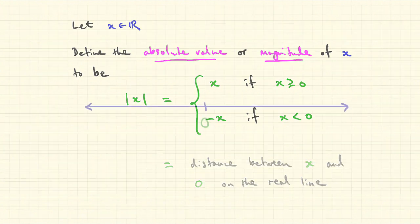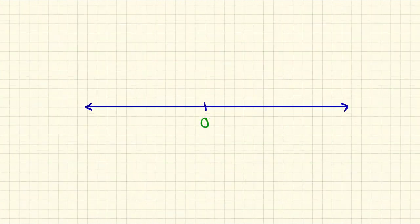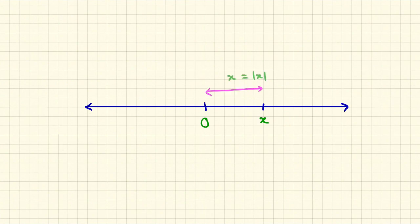Well, how could that be? Here's the real line with zero in the middle. If x is greater than zero, then the distance between x and zero is just x itself, which matches the formula for the absolute value of x. If x is less than zero, then the distance is minus x. Remember, x is negative, so minus x becomes positive. Again, matching the formula for the absolute value of x.